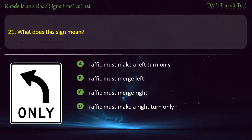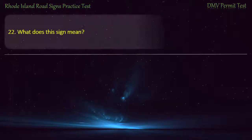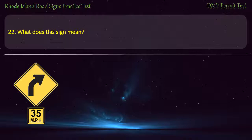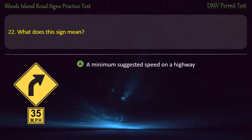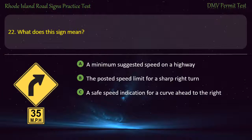Question 21. What does this sign mean? A minimum suggested speed on a highway, the posted speed limit for a sharp right turn, a safe speed indication for a curve ahead to the right.